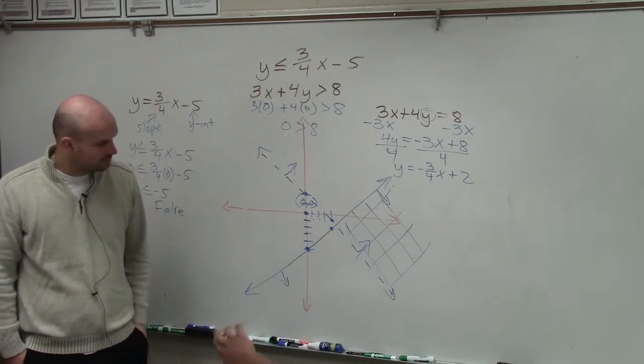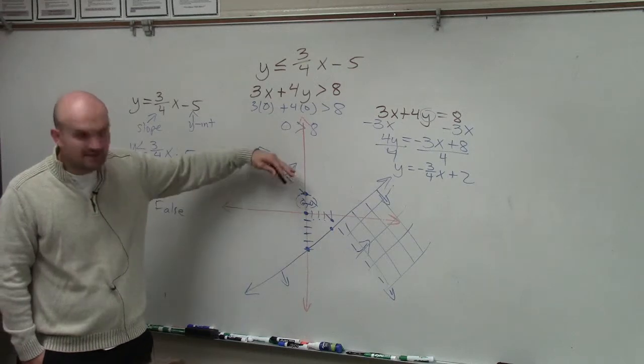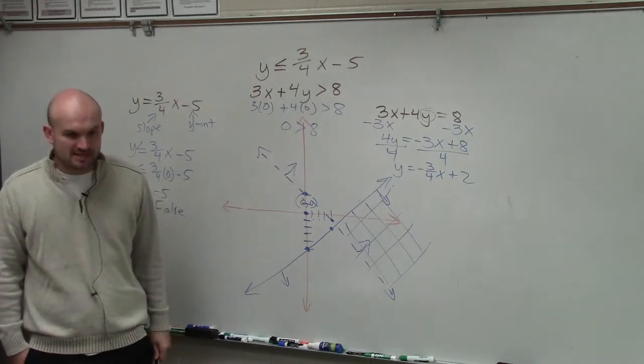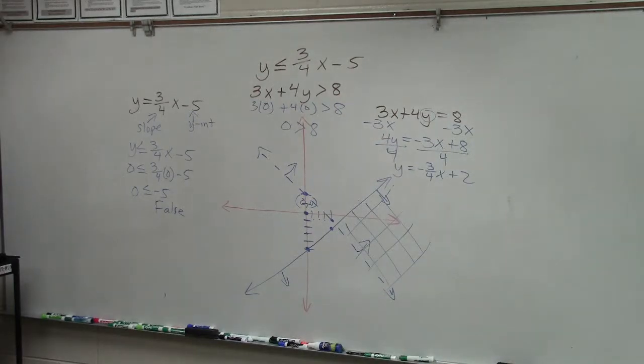So when you're shading, you just shade away from the test point? If it's false. If it was true, then you'd shade towards the test point. Okay. Anybody have any questions? Okay.